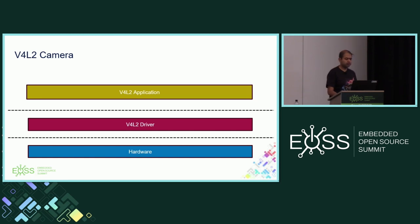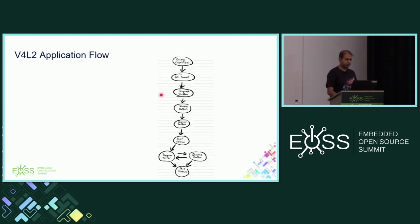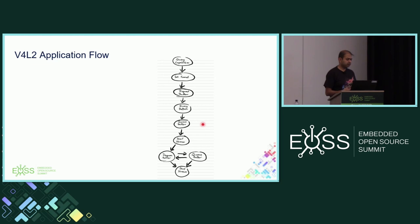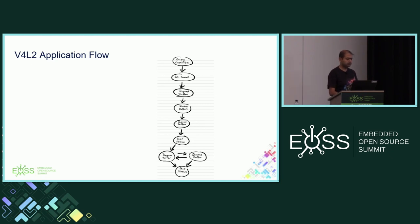V4L2 was really suitable for this external ISP architecture. A normal V4L2 camera stack has hardware at the bottom, a V4L2 driver, and a V4L2 application. The application flow starts with querying capabilities, setting up formats, requesting and querying buffers, then queuing buffers and changing state to stream on. After that, it's a constant loop of dequeuing, consuming buffers, and queuing them back. When streaming is done, you call a stop stream API.